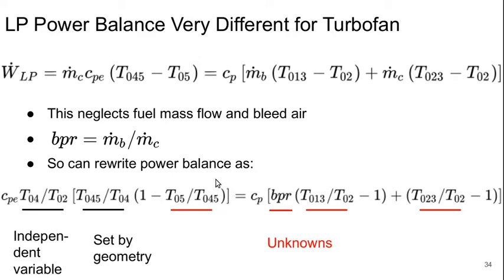T0.5 over T0.4.5 is the total temperature ratio of the low pressure turbine. The bypass ratio. T0.3 over T0.2 which is the total temperature ratio across the fan. And T0.2.3 over T0.2 which is the total temperature ratio of the flow in the core that goes through the fan plus the booster.